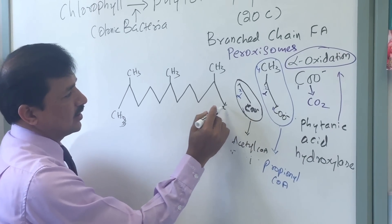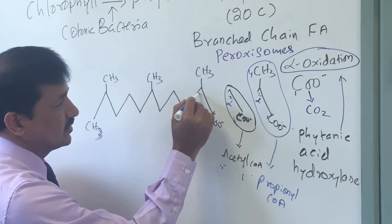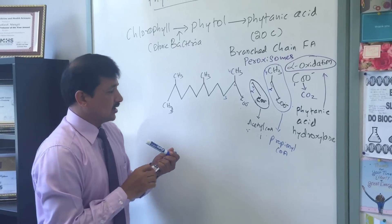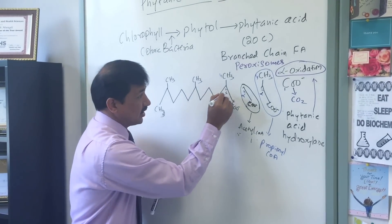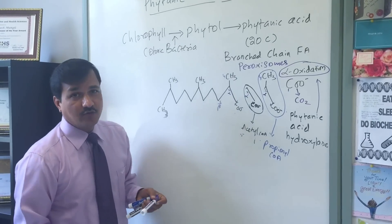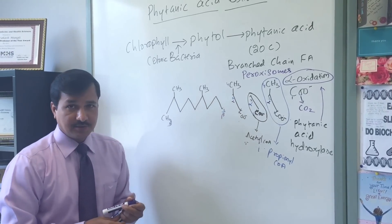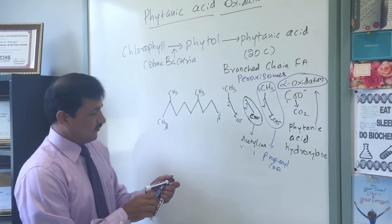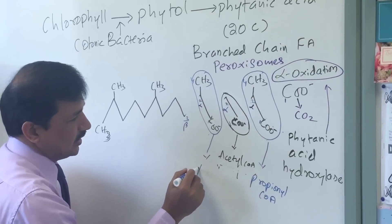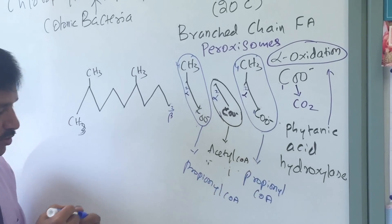With the new numbering: first carbon, second carbon, third carbon, fourth carbon. Second carbon is alpha carbon, third carbon is beta carbon — no problem for beta oxidation. All four reactions in beta oxidation go on and break the bond between alpha and beta carbon. You are getting a 3-carbon fatty acid — that is propionyl-CoA — so one more propionyl-CoA is released.